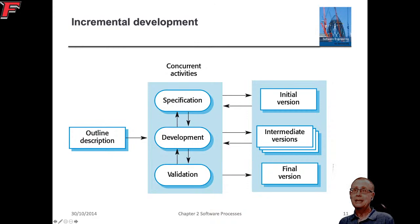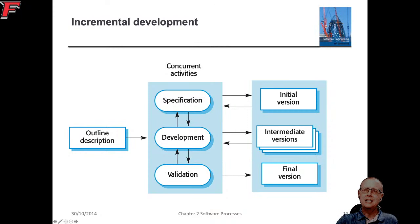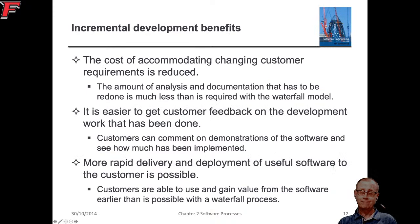Incremental development starts with the overall goal and an outline description, but then specification, development, and validation all happen at the same time or at least together. We produce an initial version, intermediate versions, and a final version, while doing specification, development, and validation all the way through.